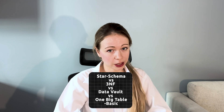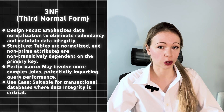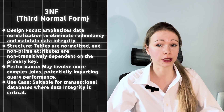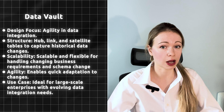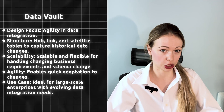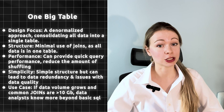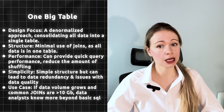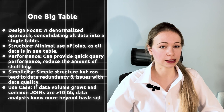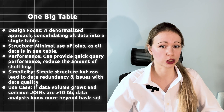Explain star schema versus 3NF versus data vault versus one big table. Star schema: a central fact table is surrounded by dimension tables, pretty simple to understand and query. 3NF - third normal form - is all about data normalization to eliminate redundancy; tables are normalized and may involve more complex joins, potentially impacting query performance. Data vault consists of hub, link and satellite tables to capture historical data changes, scalable and flexible for handling changing business requirements. One big table is a denormalized approach consolidating all data into a single table, has minimal use of joins, can provide quick query performance and reduce shuffling, but can lead to data redundancy and issues with data quality. Typical use case: if data volume grows and common joins are more than 10 gigabytes.